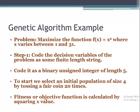Step one is to encode the decision variables of the problem as a finite-length string — coded as a binary unsigned integer of length 5. So any solution will be in the form of a string of length 5, which is the binary representation of the number. To start, we select an initial population of size 4 by tossing a coin 20 times.